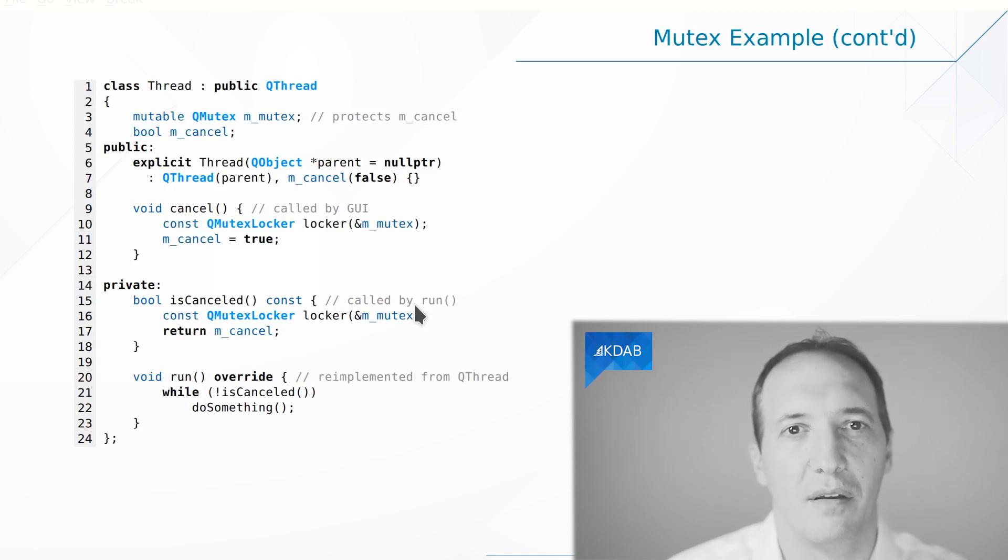All you have to do is add a member variable, the mutex, and lock it before the write and lock it before the read. And we can do that with the QMutexLocker class. What it does in the constructor is call lock on the mutex, and in the destructor it will unlock the mutex. So all we have to do is to create it at the beginning of the method on the stack. This calls the constructor, and then once we exit the method, the destructor will unlock the mutex. We do this in cancel for the write, we do it in isCanceled for the read, and now we have made it safe. So this is the right way to do this.